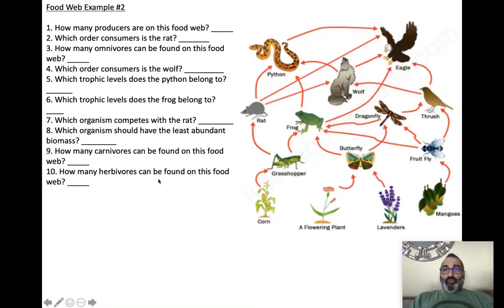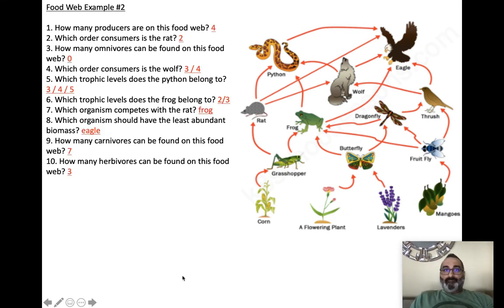How many herbivores are on this food web? One, two, three. Three herbivores on this food web. And here are the answers for you. Right there in case you didn't get a chance to write them down.